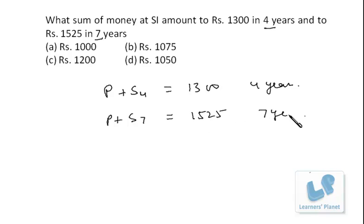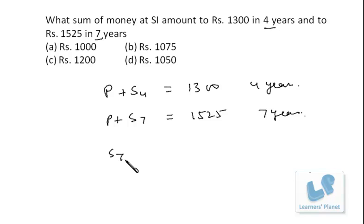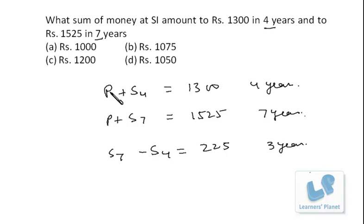Since interest for individual years is the same, if I deduct the first amount from the second, I get the interest for three years. So simple interest for seven years minus simple interest for four years equals 1525 minus 1300, which is 225. This is the simple interest for three years.